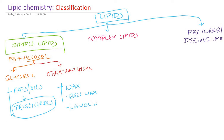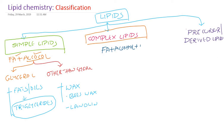Complex lipids contain fatty acids plus alcohol, and in addition to these, they also have an additional group called a prosthetic group. So complex lipids are essentially simple lipids with an additional or prosthetic group.